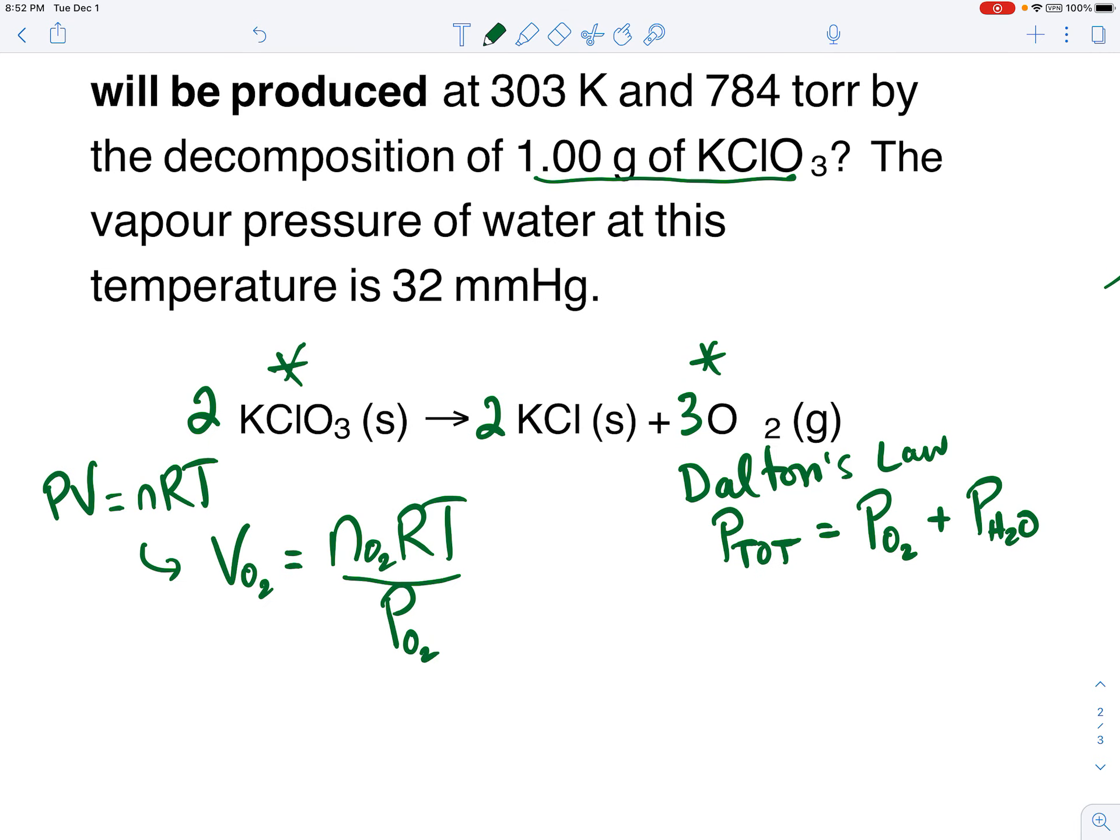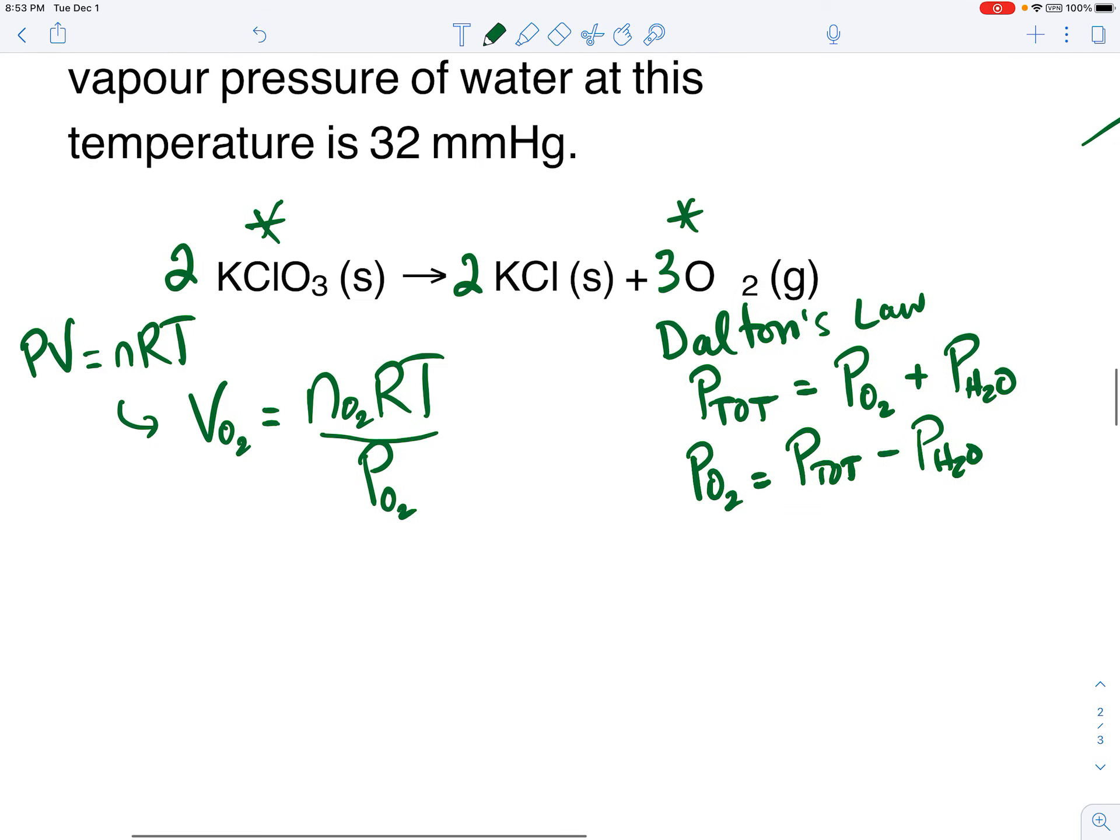So the way that question reads, we'll assume the 784 torr is the total pressure. And then the 32 millimeters mercury, or 32 torr, is the pressure of the water vapor. So then using those two pressures, we can find the oxygen's pressure by itself. So pressure of oxygen will be the total pressure minus the pressure of that water vapor, which would be 784 torr minus the 32. Remember that millimeters mercury and torr are the same things. So 784 minus 32 would be 752 torr.